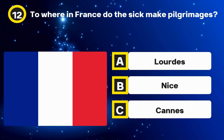Question 33. What was the first James Bond film? Options: Goldfinger, Doctor No, Thunderball. The answer: Dr. No.